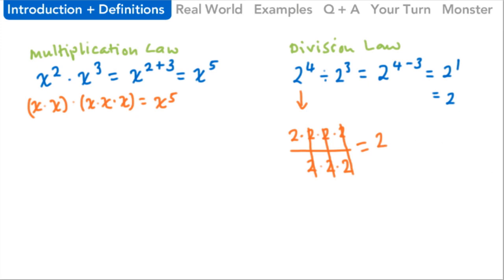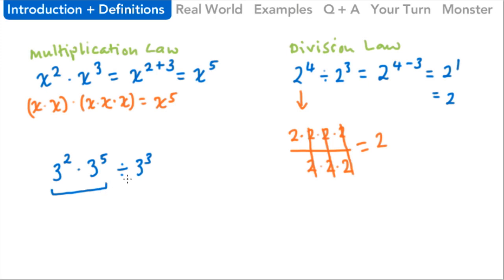Let's mix in some multiplication law rules and also the division law rules. If we've got three squared times three to the fifth power, divided by three to the third power, using PEMDAS, multiplication and division are equal priority, so we do whichever comes first. Here our multiplication comes before our division, so we tackle three squared times three to the fifth first. Same base, so we use the multiplication law — that gives us three to the seventh power. We just added those two exponents: two plus five.